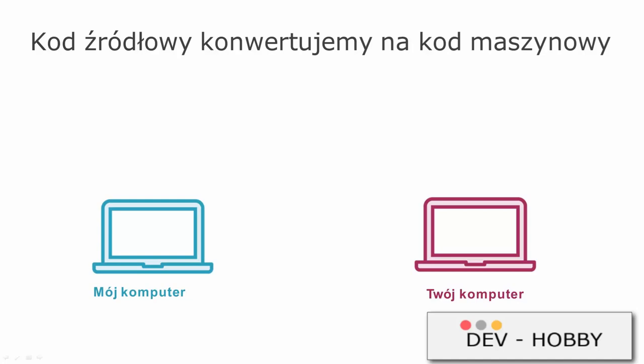When we write source code in a programming language, it must be converted into machine code that the processor can understand before the program can run. There are two main ways to convert source code to machine code: we can either compile or interpret the source code.